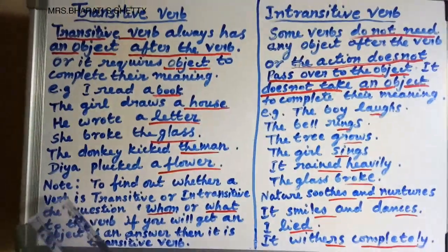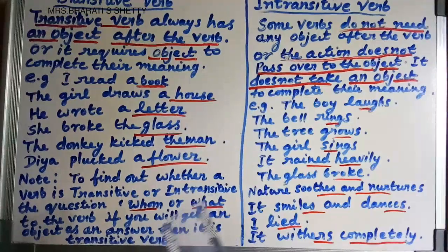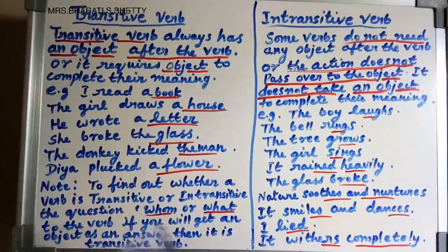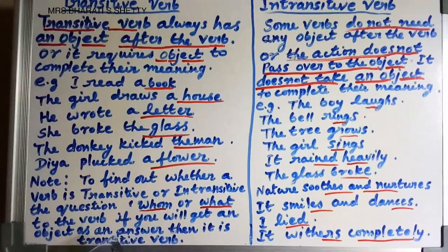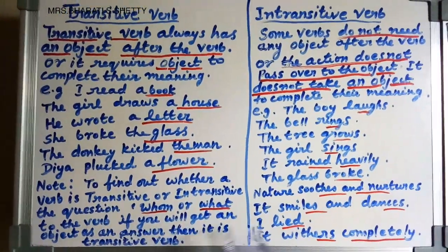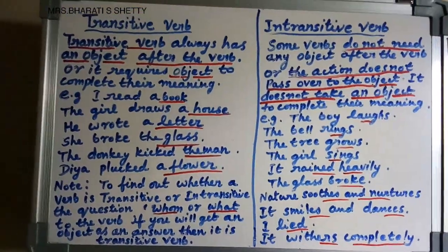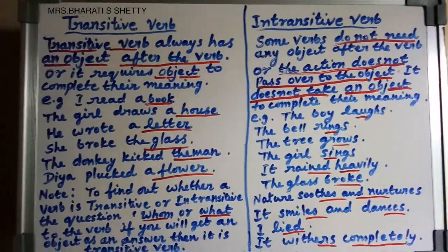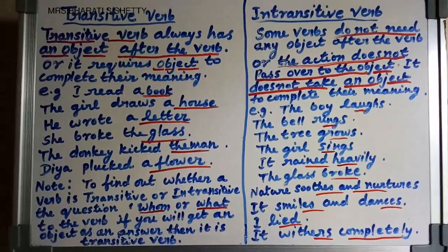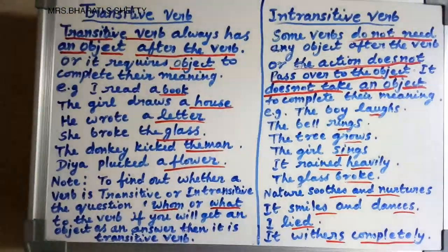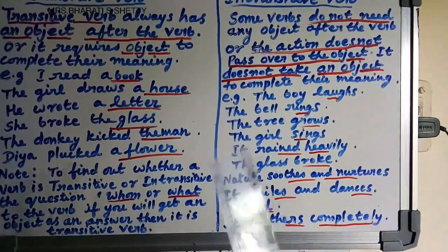Now, one more idea. To find out whether a verb is transitive or intransitive, put the question 'whom' or 'what' to the verb. If you get an object as an answer, then it is a transitive verb. For example: What did I read? A book. Okay, clear?